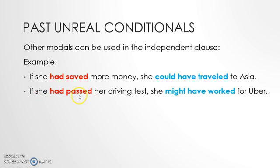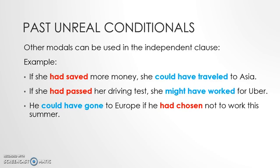This whole sentence is talking about something that never happened. 'She had passed her driving test' — in reality, she did not pass her test. And 'she might have worked for Uber' — in reality, she doesn't work for Uber. Another example: 'He could have gone to Europe if he had chosen not to work this summer.' We can use 'could have gone' in the independent clause. So in reality, he did not go to Europe and he worked during the summer.